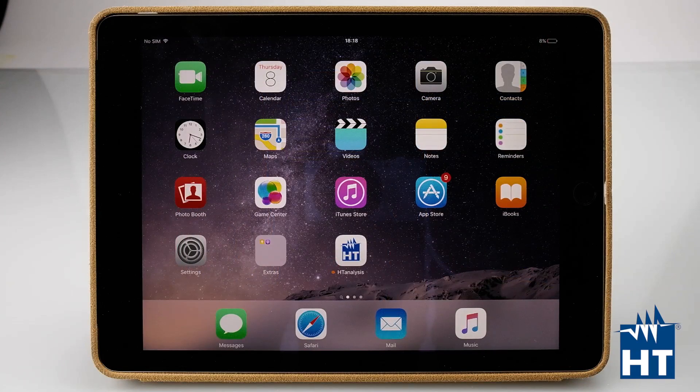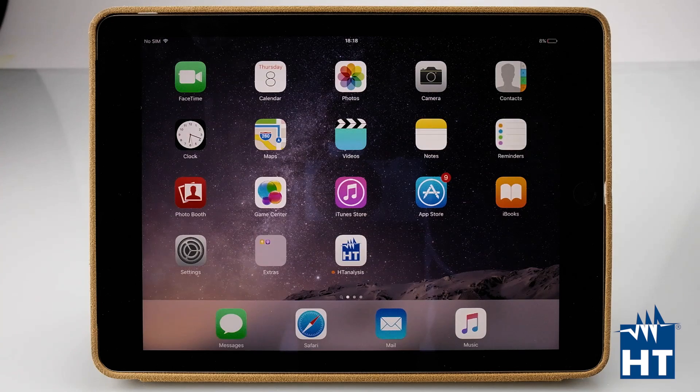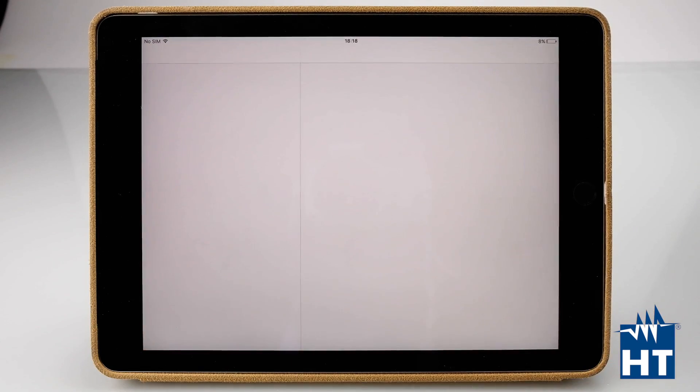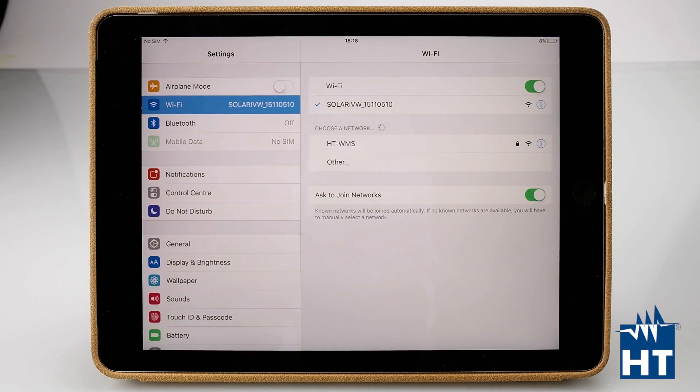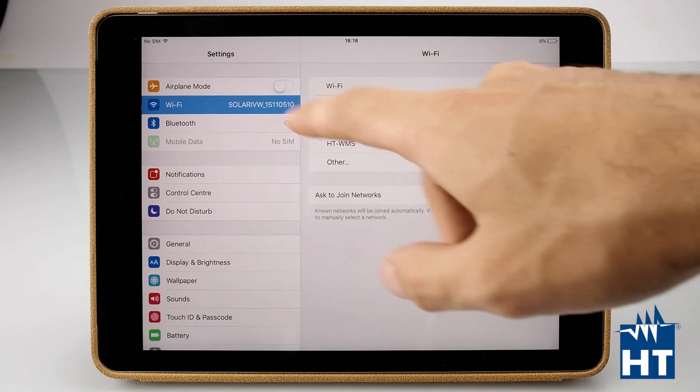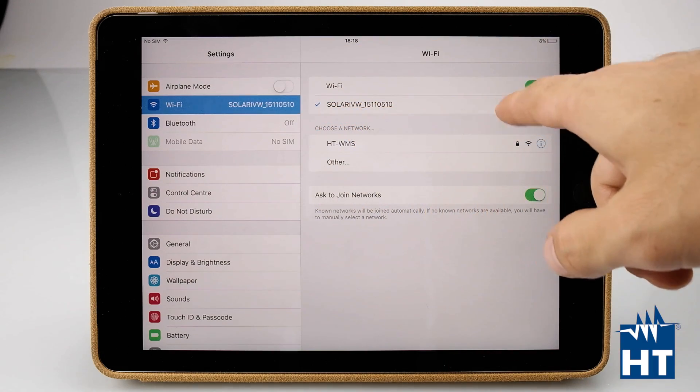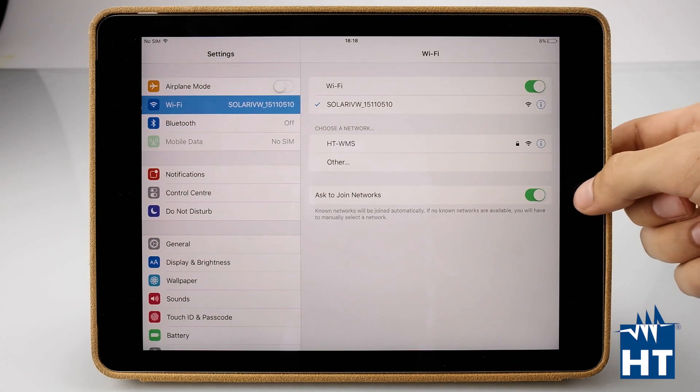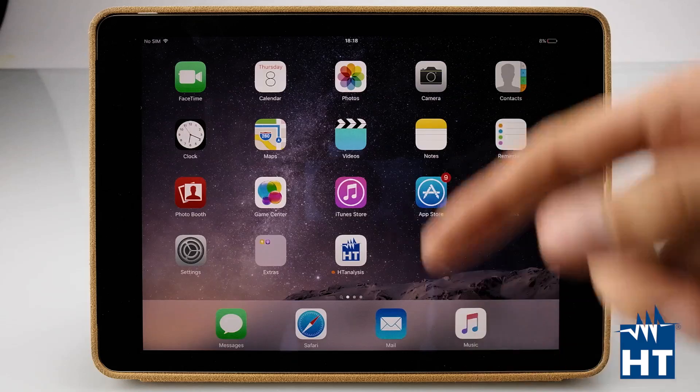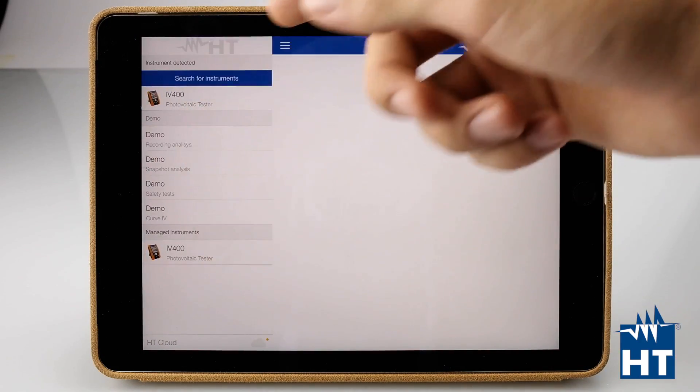Now in this part of the video, I'm going to show you how the HT Analysis app works. First of all, let's connect the IV400W directly to our iPad through Wi-Fi connection. In Wi-Fi connections in the iPad menu, we can find Solar IV here as a standard Wi-Fi connection. We just have to press here as a normal Wi-Fi connection. And after the connection is done, we can go directly into the HT Analysis.